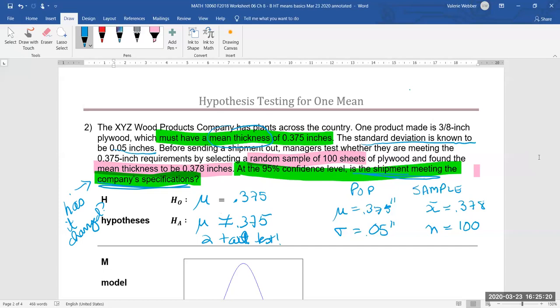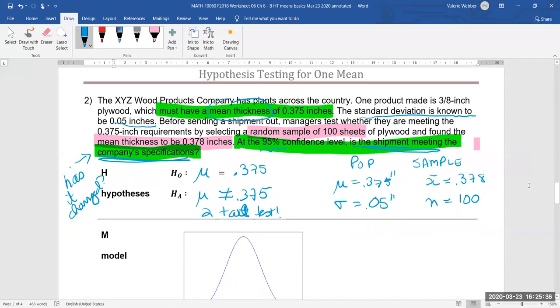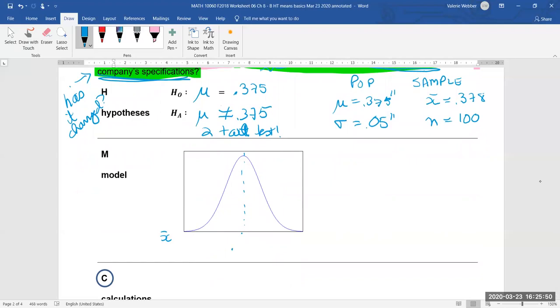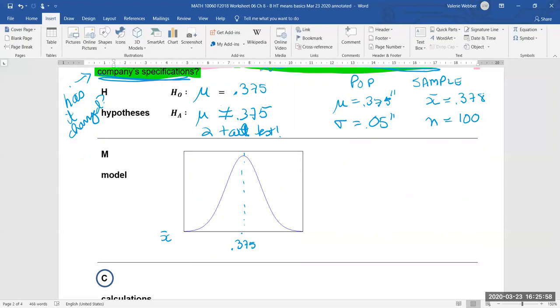Okay, so we're going to have to keep that in mind. We also have to remember that we're testing at the 95% confidence level. So we figured out our hypotheses: it either meets the specifications at 0.375, or it doesn't. So let's continue on and do our sampling distribution of means. We're going to have our x-bars like normal, we're going to have our center at 0.375.